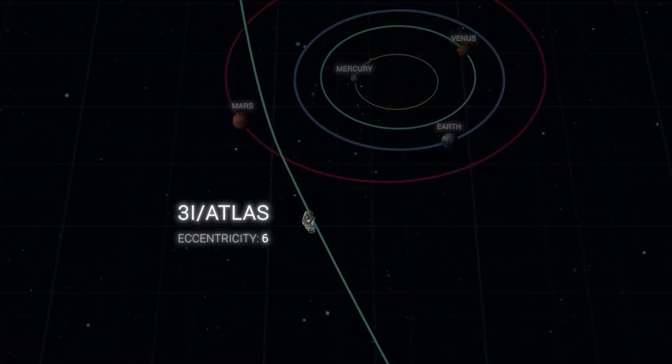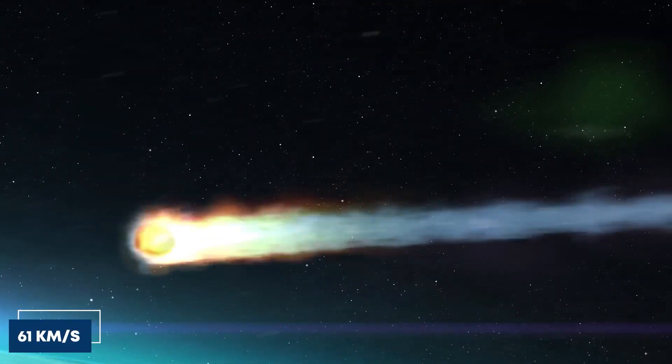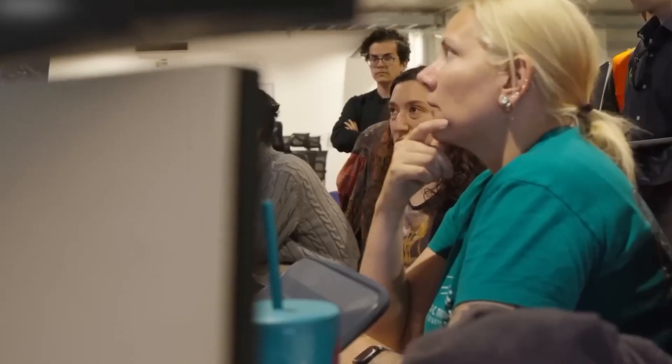Right now, something is racing through our solar system at 61 kilometers per second, and scientists can't agree on what it really is.